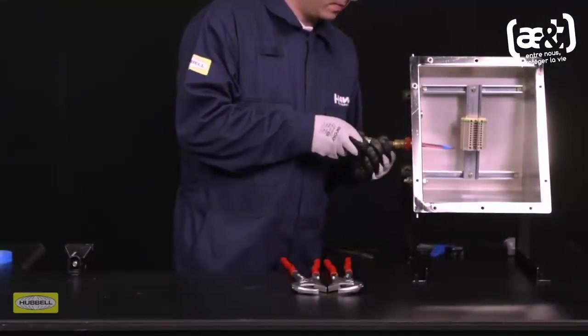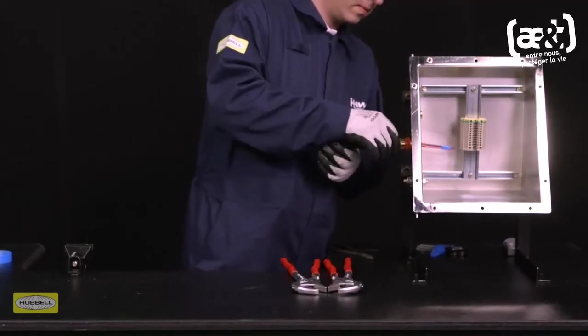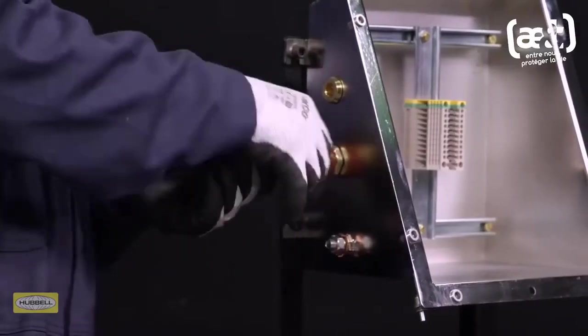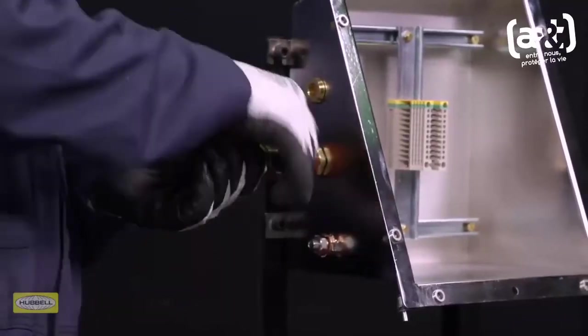Slide the cable through the entry until the pot is seated in the entry. Hand tighten the middle nut to the entry and add a fifth to a quarter turn with a wrench.